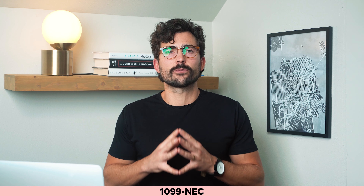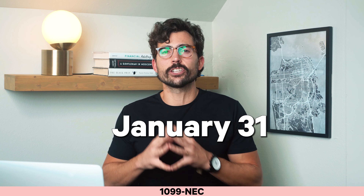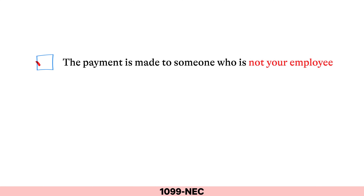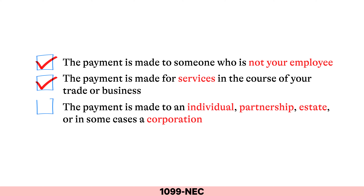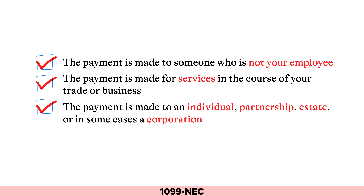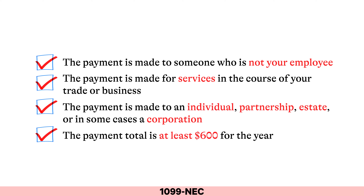You should receive these forms by January 31st each year. The IRS states that a business must report payments if they meet the following four conditions: one, the payment is made to someone who is not your employee; two, the payment is made for services in the course of your trade or business; three, the payment is made to an individual, partnership, estate, or in some cases a corporation; and four, the payment total is at least $600 for the year.